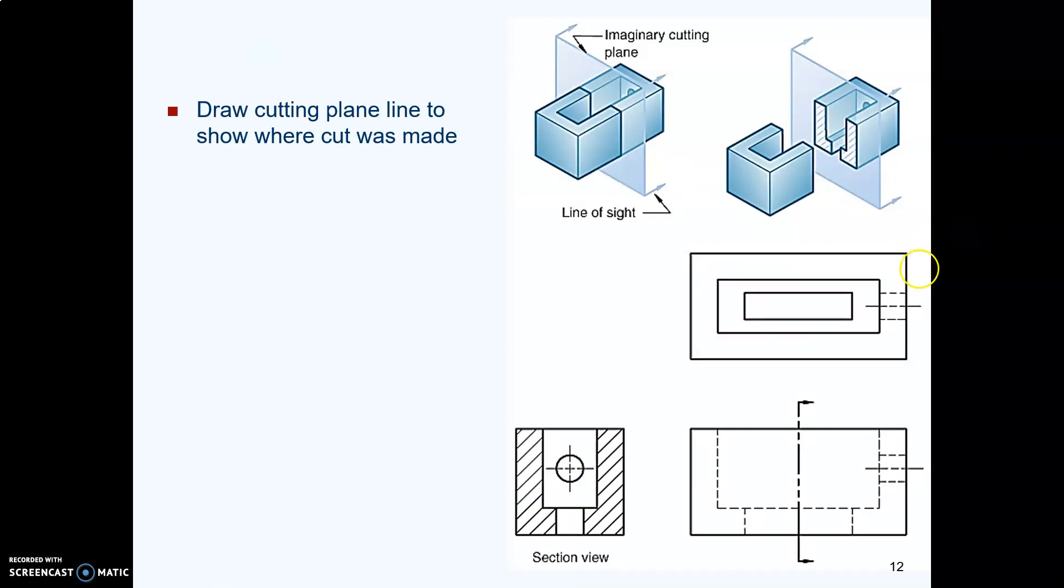Here's another example. In this one, here's the cutting plane line showing that we cut the part in the middle. We're looking to the right and we threw away the left half. Here is that view that is left in our glass box.